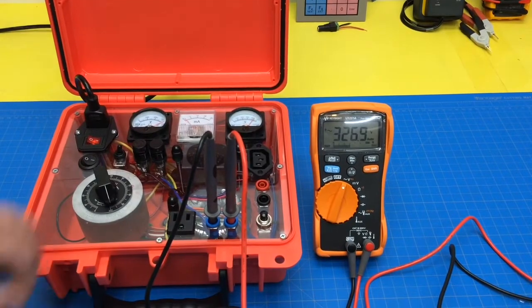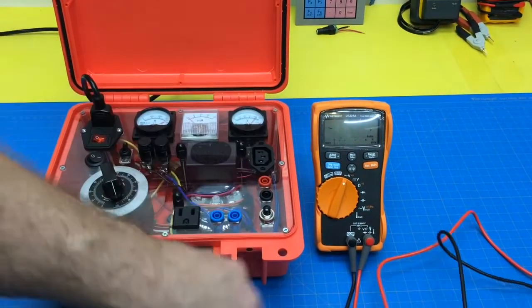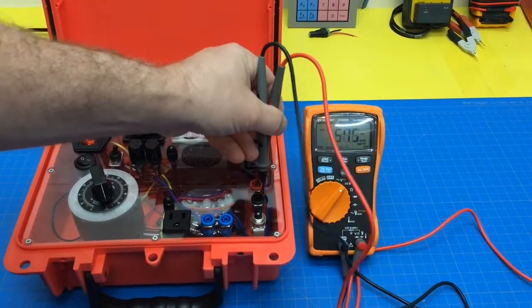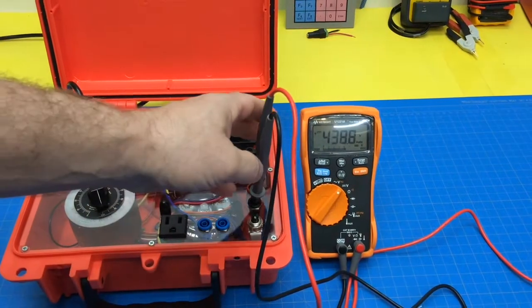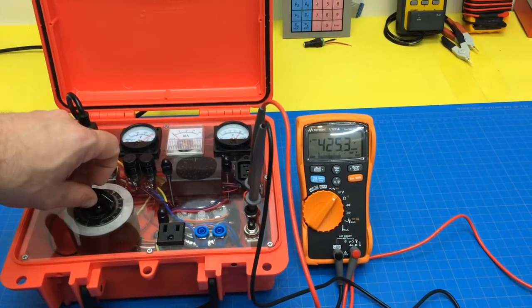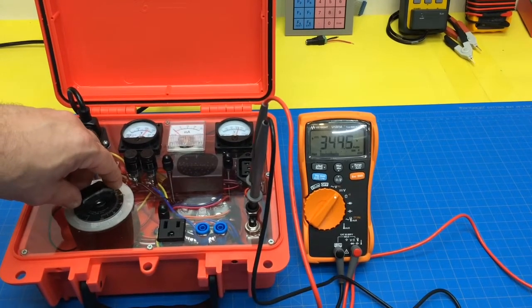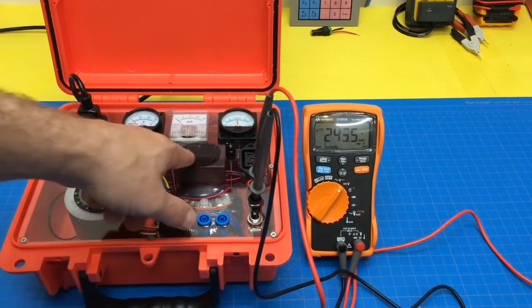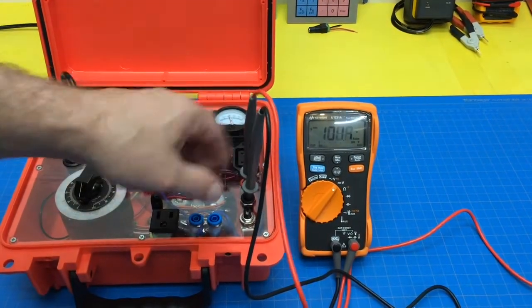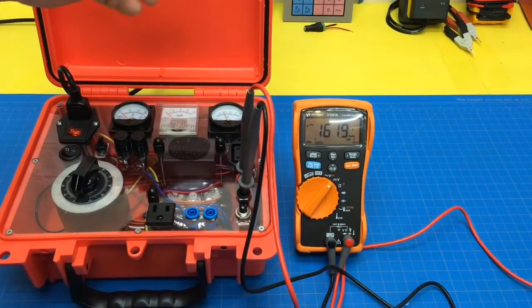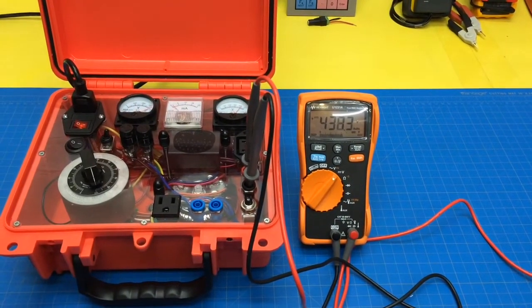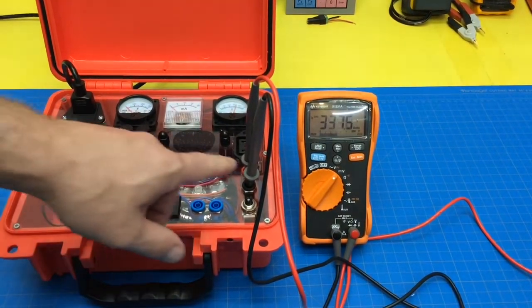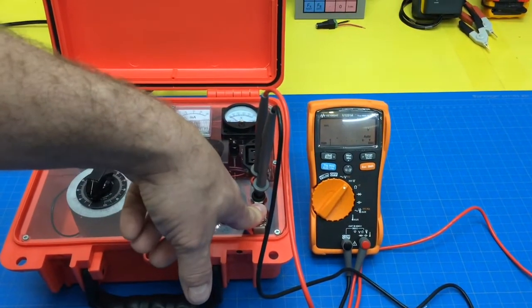Alright, so 326 volts AC. Let's switch this to DC and pop it in here. 438. Now the DC will climb down slowly because right now that cap is just dissipating through this. Cool. Crank it back up. And let's turn that off, that off. And this will drain that cap pretty quick.